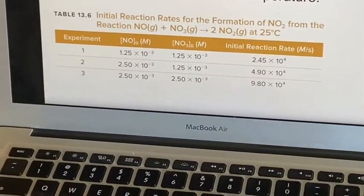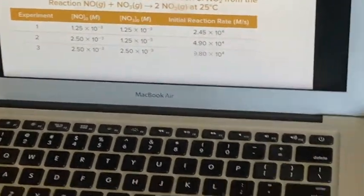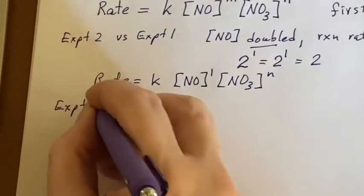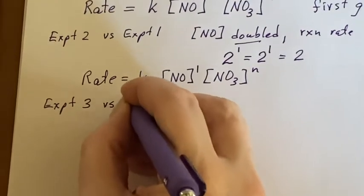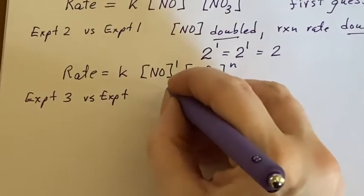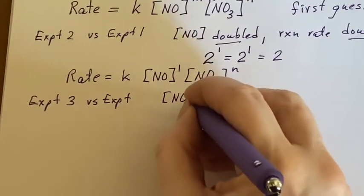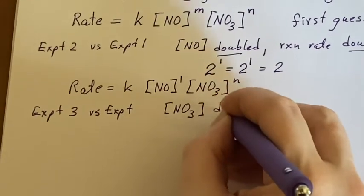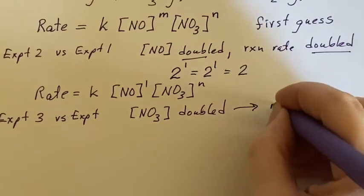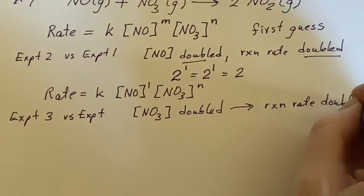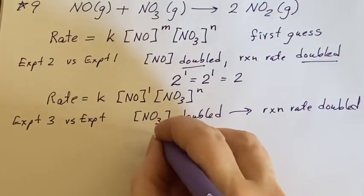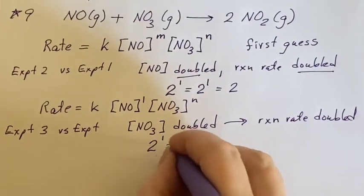The reaction rate doubled when I doubled this one. So that's kind of the same thing as what I just did. If I look at experiment three versus experiment one, then I find out that the NO₃ concentration was doubled, and that meant that the reaction rate got doubled. I can say two to the first power is two.